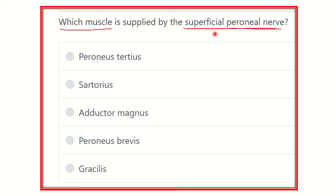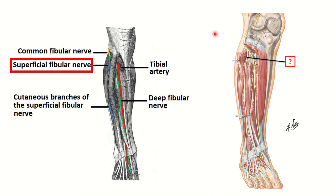Let's look at a picture of the superficial peroneal nerve. Here we can see the common fibular nerve, also called the common peroneal nerve. After passing the neck of the fibula, it divides into two parts: one is the superficial peroneal nerve and the other is the deep peroneal nerve. The superficial peroneal nerve descends on the lateral side of the leg, with cutaneous branches visible here.